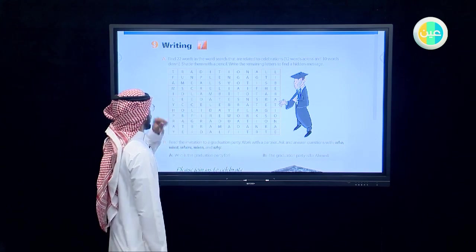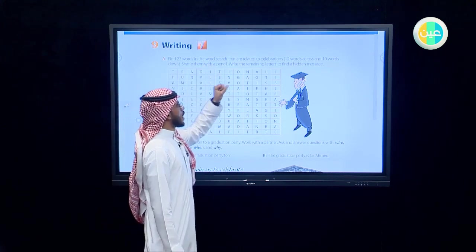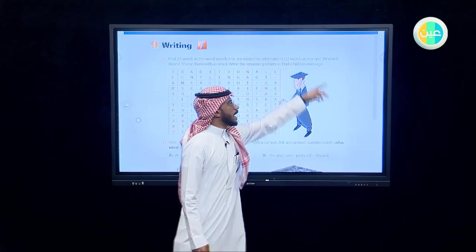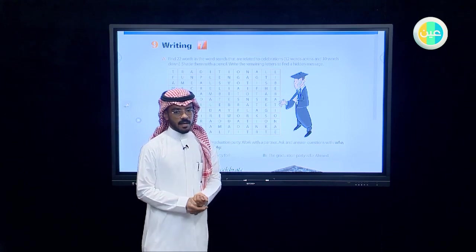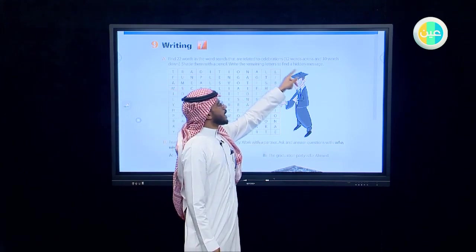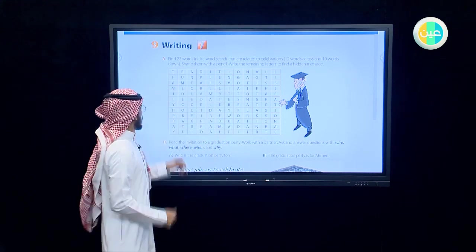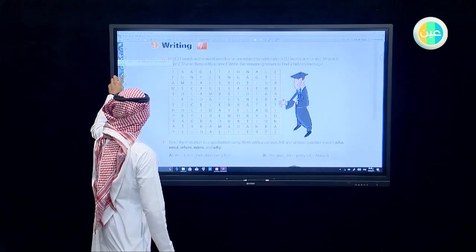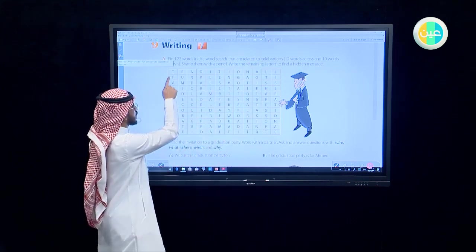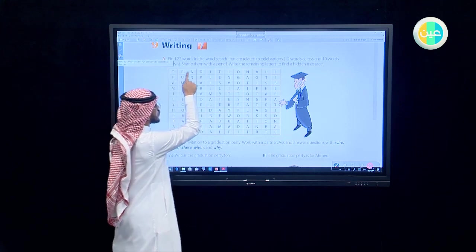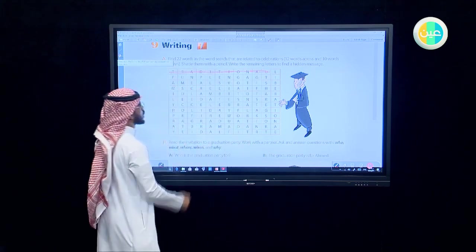Writing: find 22 words in the word search that are related to celebrations, 12 words across and 10 words down. Across and down, shade them with a pencil and write the remaining letters to find a hidden message. Let's take this word: traditional. The second word is fun.